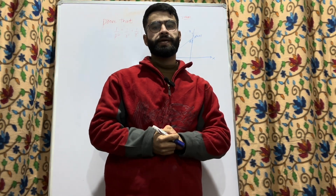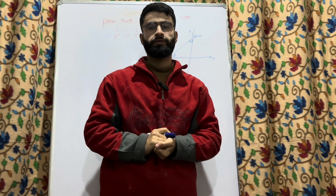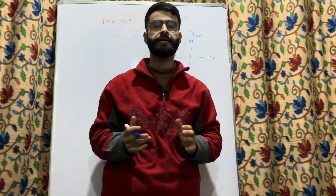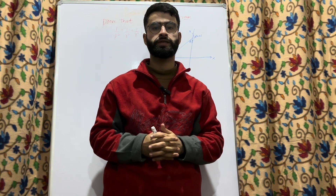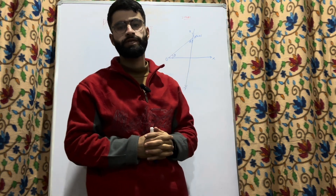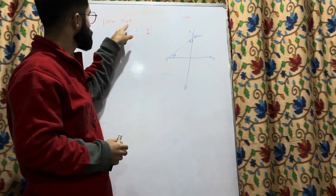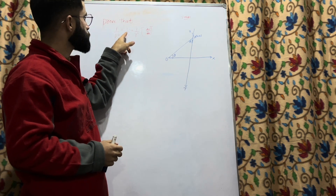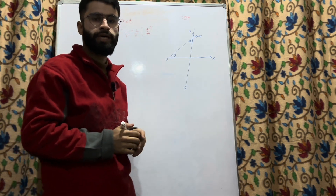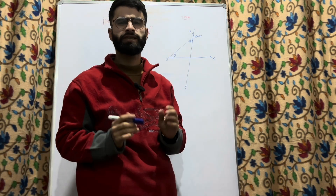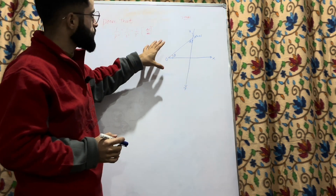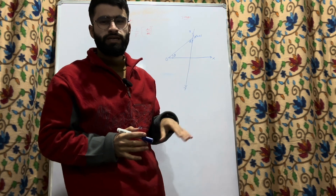Hello dear students, welcome back to the channel. Last time we discussed the derivation for the angle between a radius vector and the tangent. Today we have another important derivation worth seven marks: to prove that 1/p² = 1/r² + (1/r⁴)(dr/dθ)². You cannot neglect this one — it is a very easy derivation which you can easily solve in the examination.